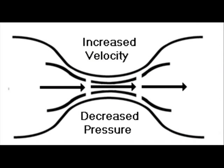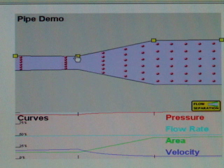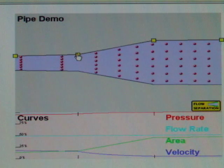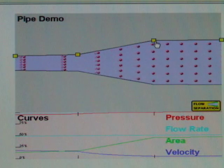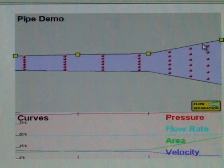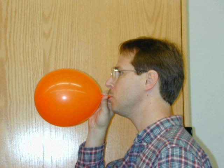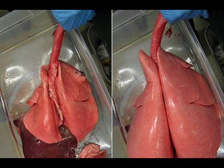The Bernoulli principle provides the basis for the use of heliox to relieve upper airway obstruction. Heliox causes the lateral wall pressure to decrease to a lesser extent and produces less of a velocity increase across the partial obstruction. Essentially, less pressure energy is converted to kinetic energy when heliox is breathed, enabling more pressure to be available for lung inflation beyond the obstruction.